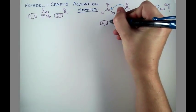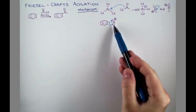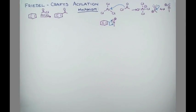Now we can show the double bond of benzene attacking at the carbon of our acylium ion, pushing the electrons onto oxygen.